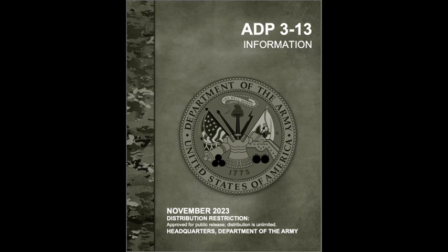That brings us to the information advantage framework as outlined in ADP 3-13 — the five fingers of a hand, each playing a crucial role. Enable: making sure our own house is in order. Protect: locking down our digital fortress. Inform: building trust and shaping the narrative. Influence: nudging the adversary into making mistakes. And Attack: using cyber and electronic warfare to disrupt their ability to operate in the information domain. In modern warfare, sometimes the most important victories are silent and invisible.